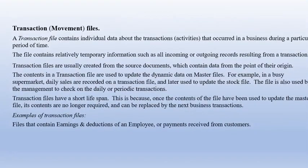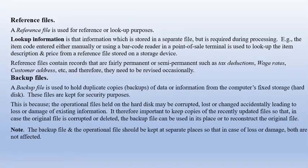A transaction or movement file contains individual data about transactions or activities that occurred in the business during a particular period of time. For example, in a supermarket, you can have transactions of 1st July, transactions of 2nd July — those are the transaction files. They are individual files of activities in a particular period of time, and they are added to the master file.